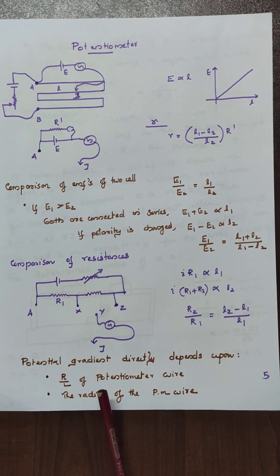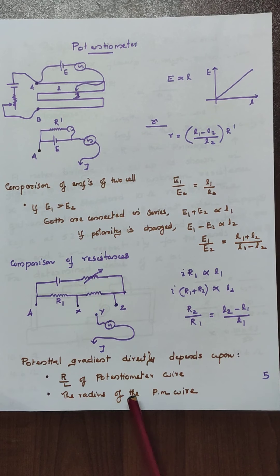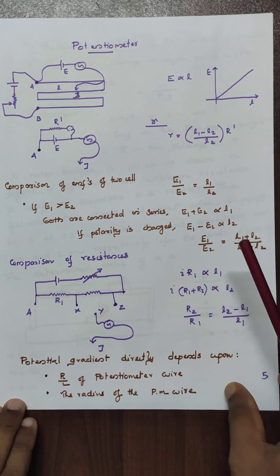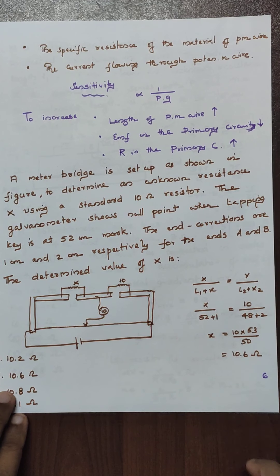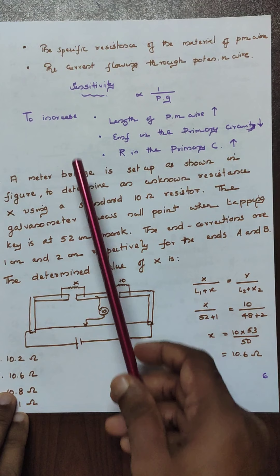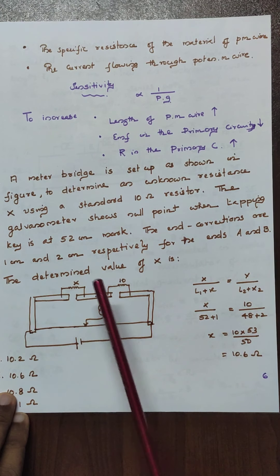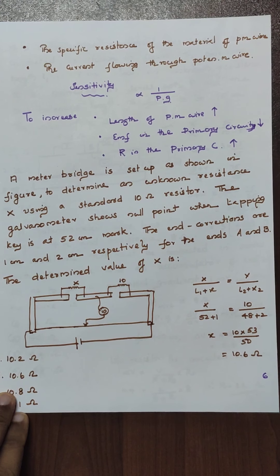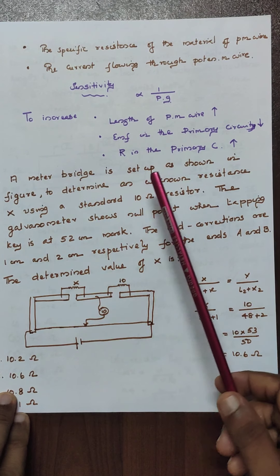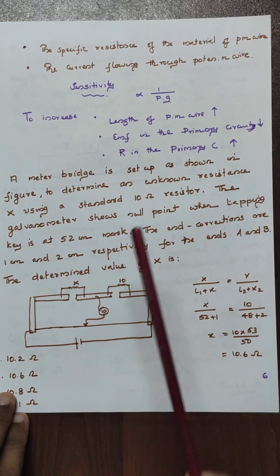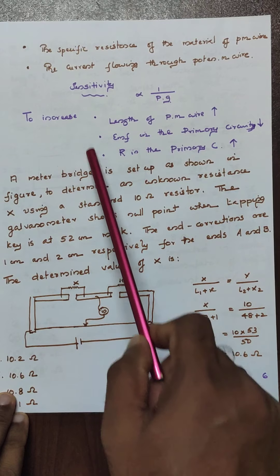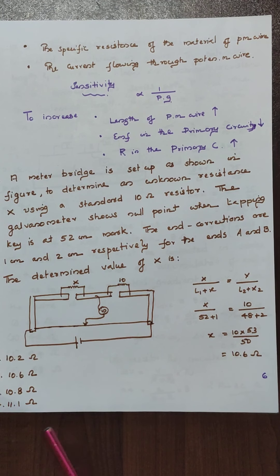In a potentiometer, the very important term is the potential gradient. It is directly proportional to: the resistance per unit length of the potentiometer wire, the radius of the potentiometer wire, the specific resistance of the material of the potentiometer wire, and the current flowing through the wire. The sensitivity of a potentiometer is proportional to 1 by the potential gradient. If the potential gradient decreases to a minimum, sensitivity is maximum. To increase sensitivity, increase the length of the potentiometer wire, decrease the EMF of the primary cell, or increase the resistance in the primary circuit.